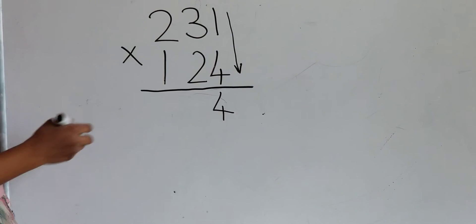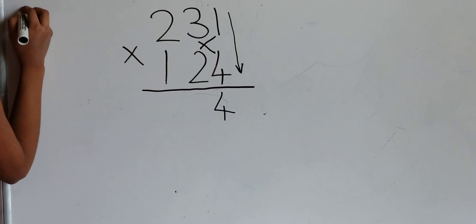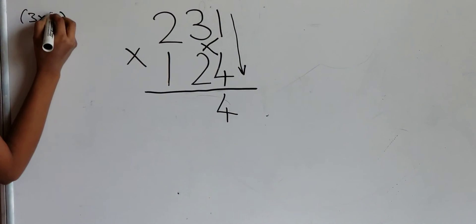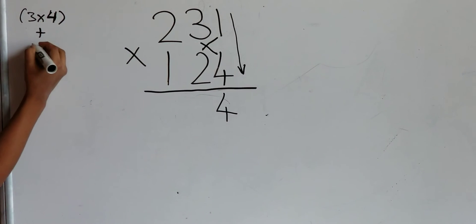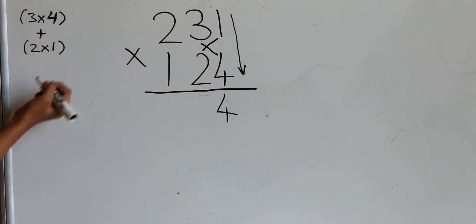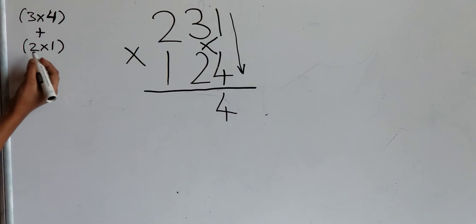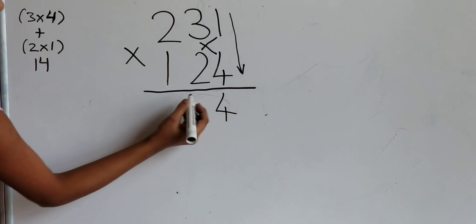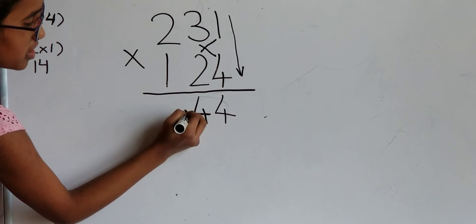Next, multiply 3 times 4 plus 1 times 2. 3 times 4 is 12, and 2 times 1 is 2. 12 plus 2 is 14. Write the 4 over here and carry the 1.